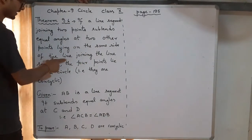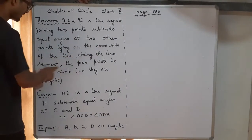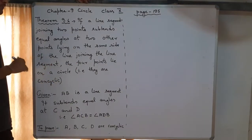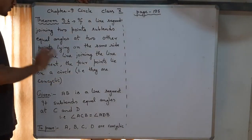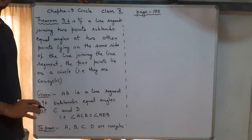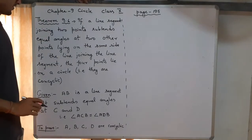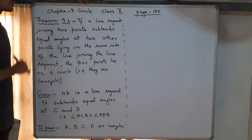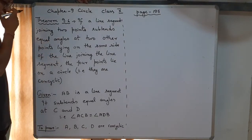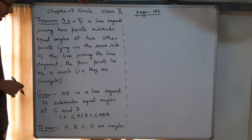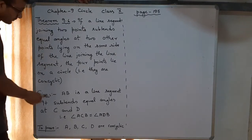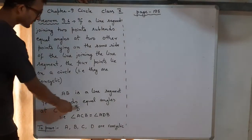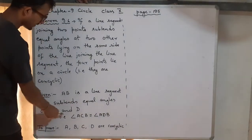First, we do not talk about the circle. After establishing the equal angles, we then say that all four points should lie on the same circle. So let's start. It is given that AB is a line segment, and it subtends equal angles at points C and D.